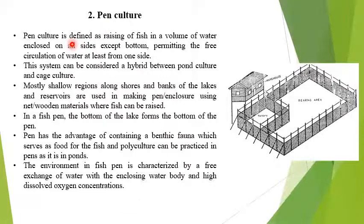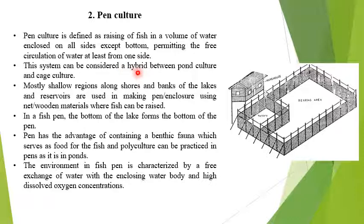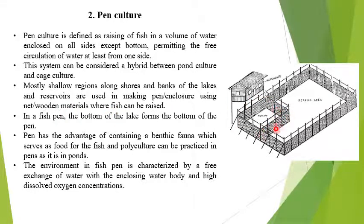Pen culture is defined as the raising of fish in a volume of water enclosed on all sides except the bottom, permitting free circulation of water from at least one side. This system can be considered a hybrid between pond culture and cage culture. Pen culture is mostly practiced in shallow regions along the banks of lakes and reservoirs. Nets, wooden material, and nylon nets fixed at the bottom with bamboo sticks and other structures are used to form the pen.